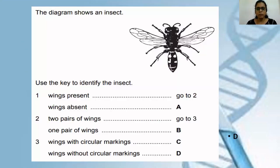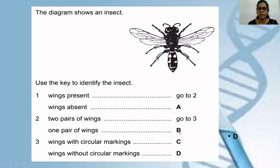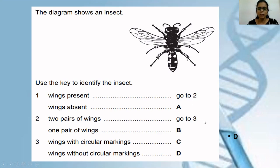This is a question from the objective type questions. The question given here is: the diagram shows an insect. Use the key to identify the insect — whether it is A, B, C or D. The first two choices given are: wings present — go to two; and if wings are absent, then the insect is A. If we see the diagram clearly, in this particular picture two pairs of wings are given. So that means A is wrong — you have to go to two if wings are present.